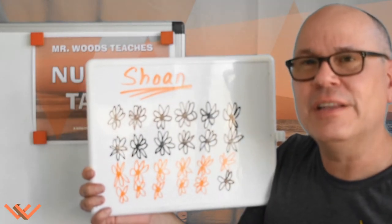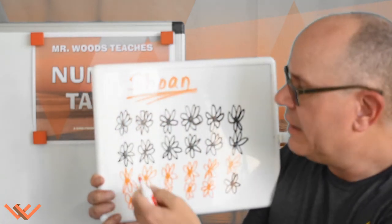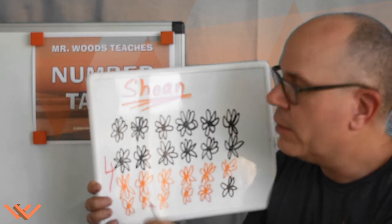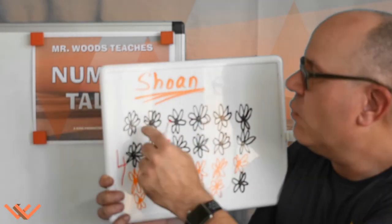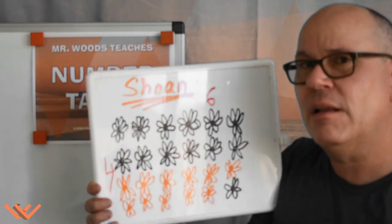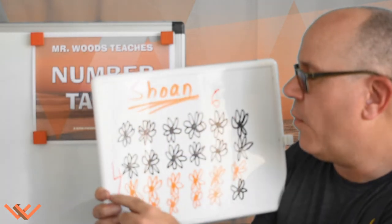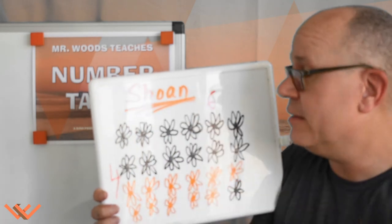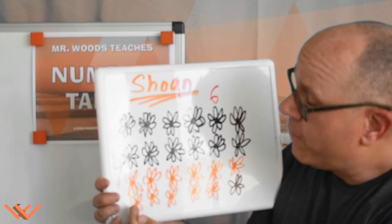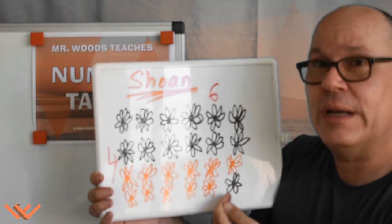Now we can easily determine the number of sunflowers that Shone had before the thirteen died. Because right now we have one, two, three, four rows. And one, two, three, four, five, six columns. That means that either I have six fours or four sixes. Let's count by fours: four, eight, twelve, sixteen, twenty, twenty-four.